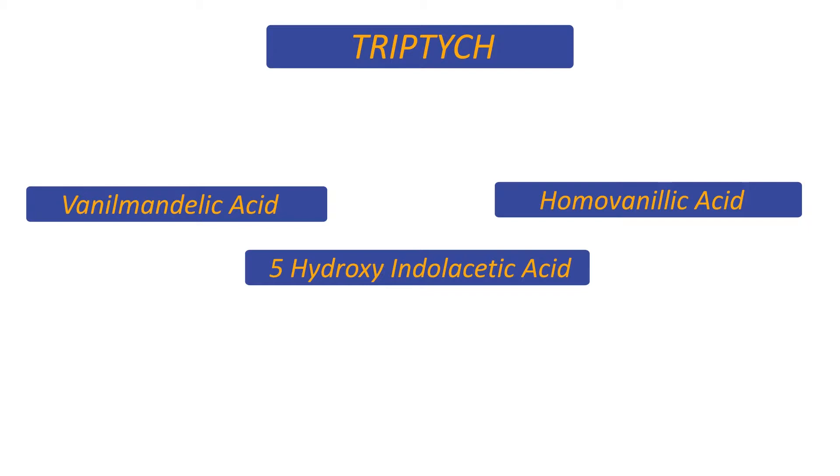These three markers allow us to make a diagnosis of pheochromocytoma that we will find in the urine between 72 and 96 hours after a sudden hypertensive crisis.